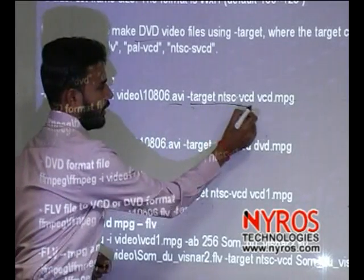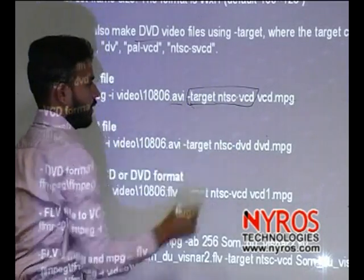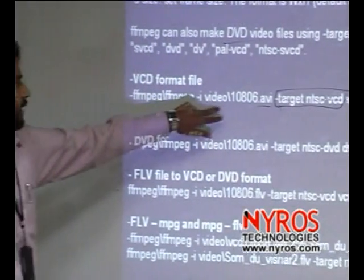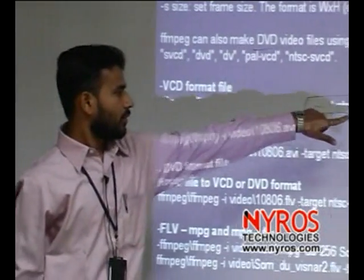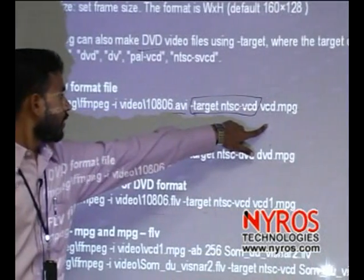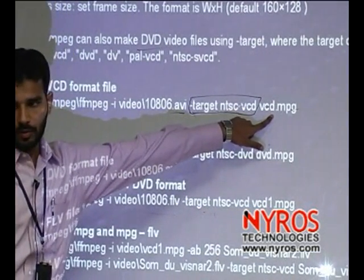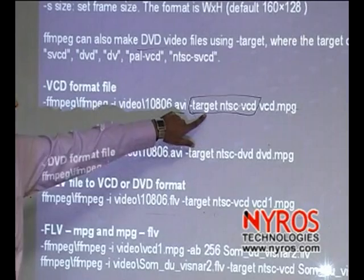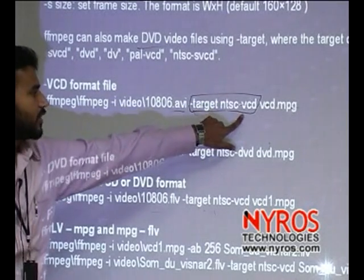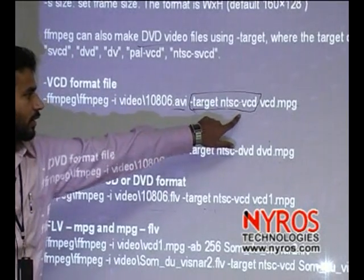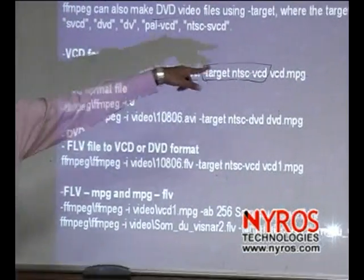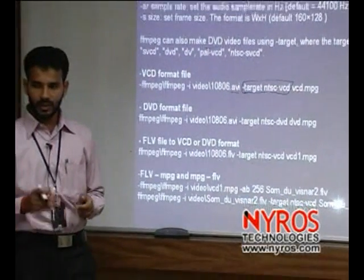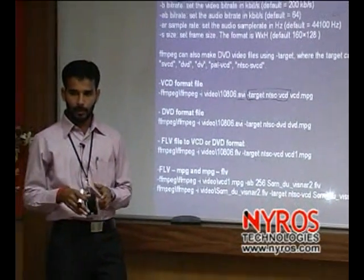This is the input file and this is the output file. This is the command to target the VCD format using the target VCD option. It will be converted — that file — into our VCD formatted file.